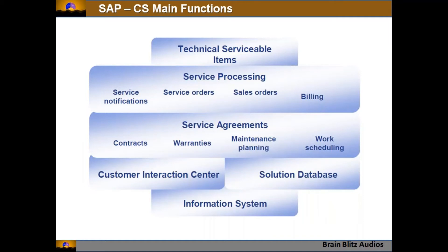The main functions of the CS module include: first, technical serviceable items — these are products or machines at the customer site where service is needed, represented as master data in the form of functional locations and equipment, with classifications and characteristics attached. Second, service processing — which involves different objects: service notifications are created for any issue or requirement, then a service order covers the planning stage, and costs are accumulated on the order.